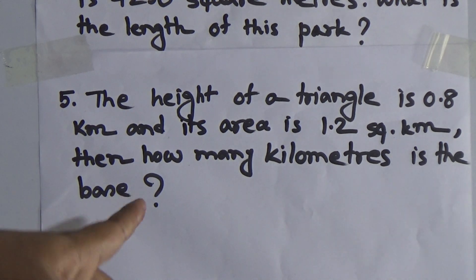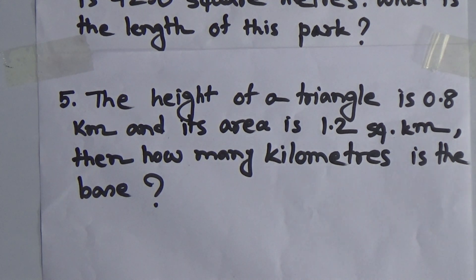But here we need to find out the base of this triangle. So the formula will be 2 multiplied by area divided by height. I repeat, 2 multiplied by area divided by height. So, in order to solve that math, at first, we need to write given that.